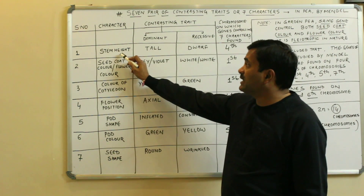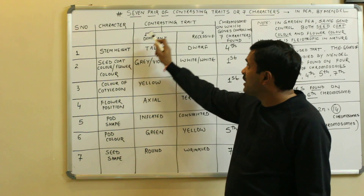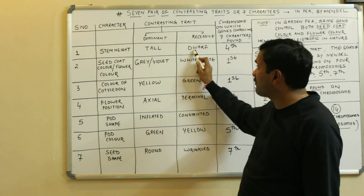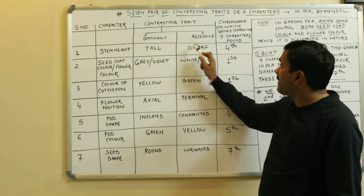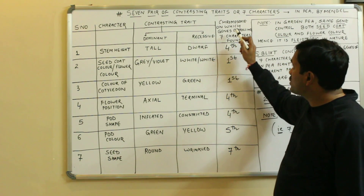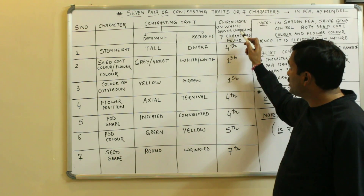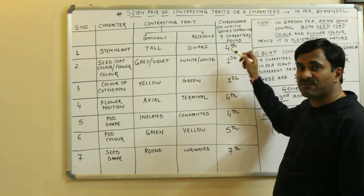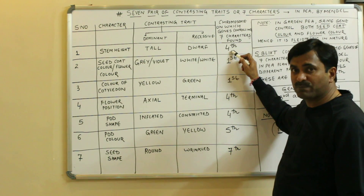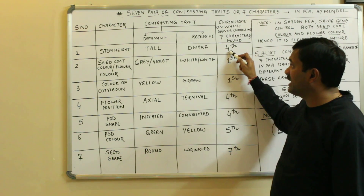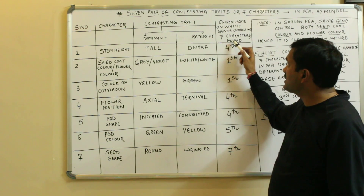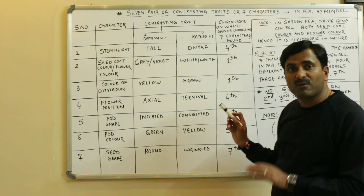Number one: stem height. The contrasting traits for stem height are tall and dwarf. Tall is the dominant trait and dwarf is the recessive trait. The gene controlling this character is found on chromosome number four.